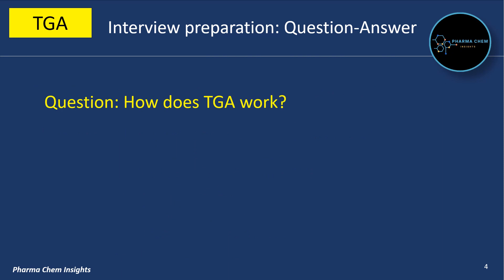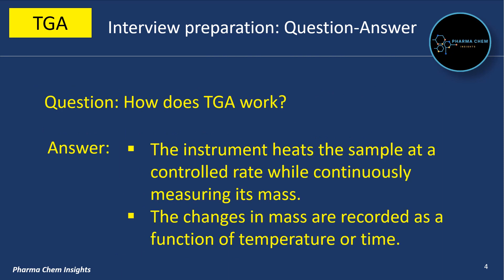How does TGA work? The instrument heats the sample at a controlled rate while continuously measuring its mass. The changes in mass are recorded as a function of temperature or time.